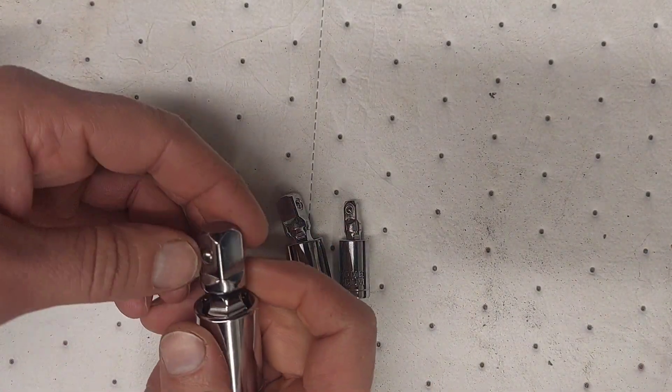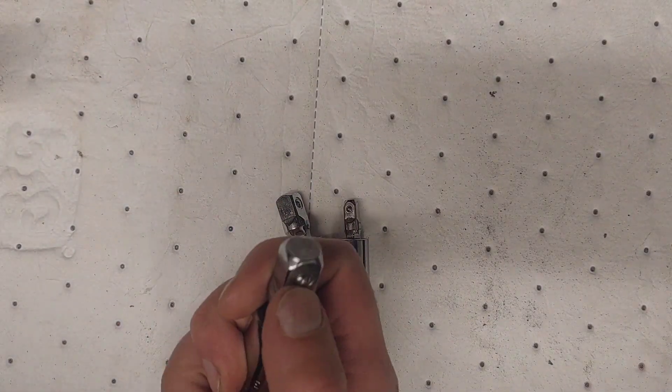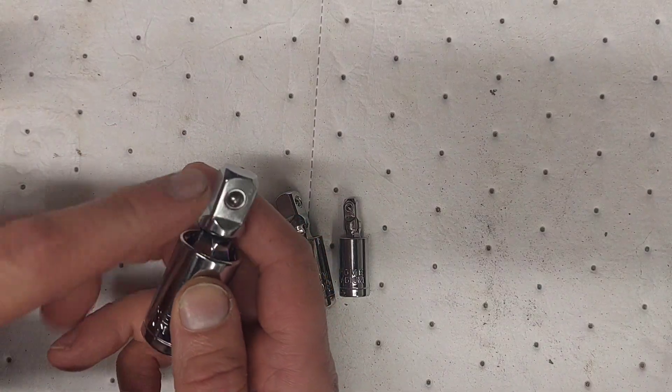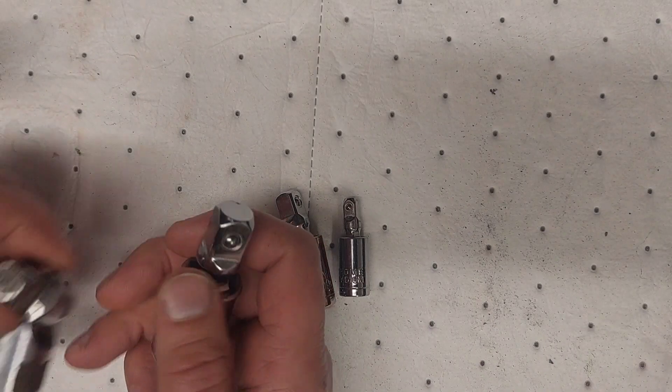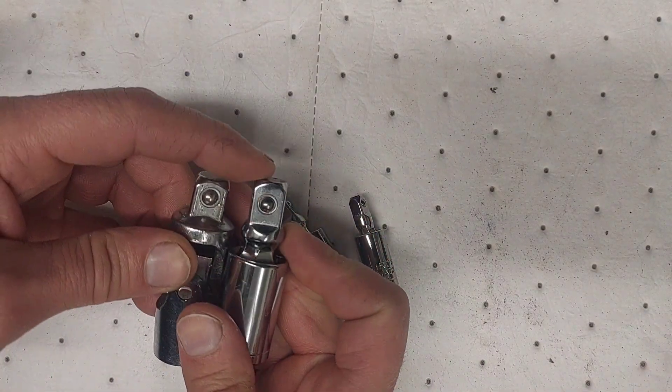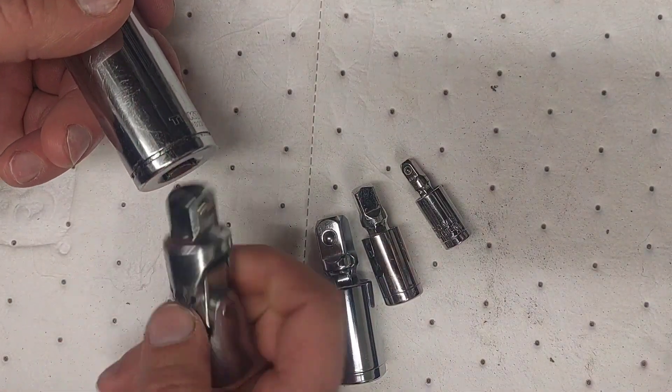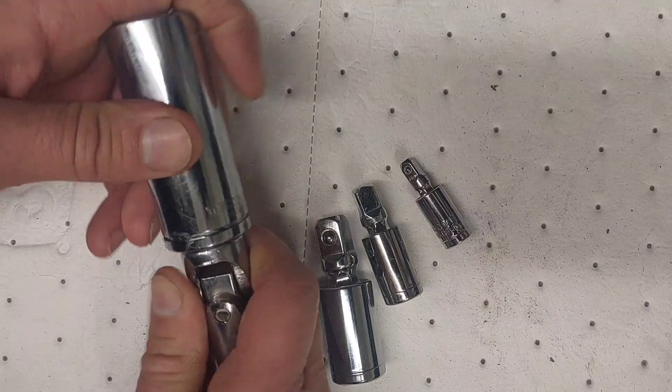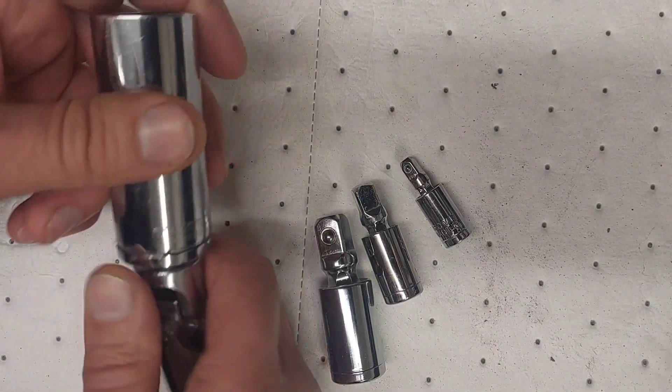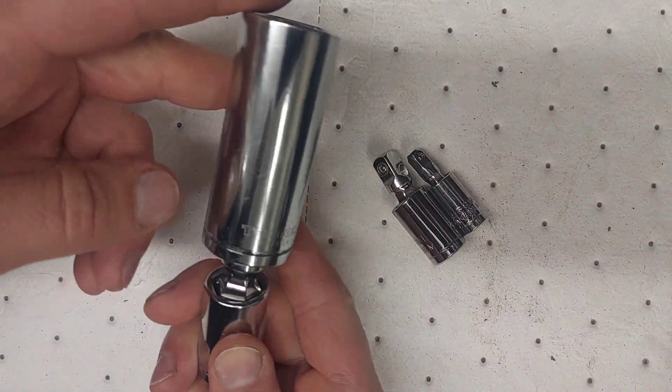These do have detents in them. One thing I was noticing is that the piece up here where you put the socket on—I got another set of universals here and as you can see, this piece here is a little bit longer than this one. So it is going to sit up. This one sits pretty close to flush, but on this one you're going to have a lot more room, it sticks up a lot.